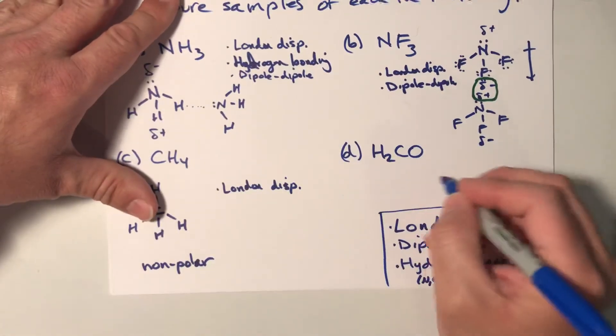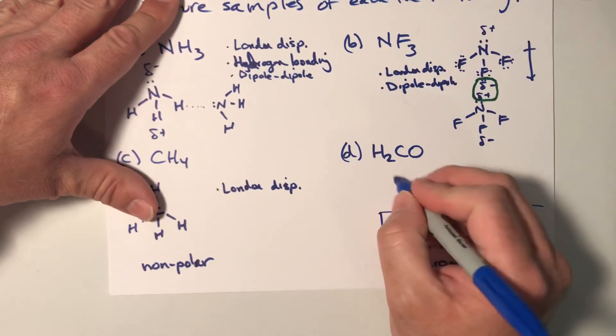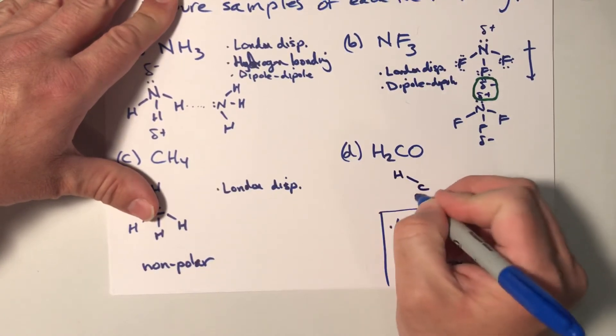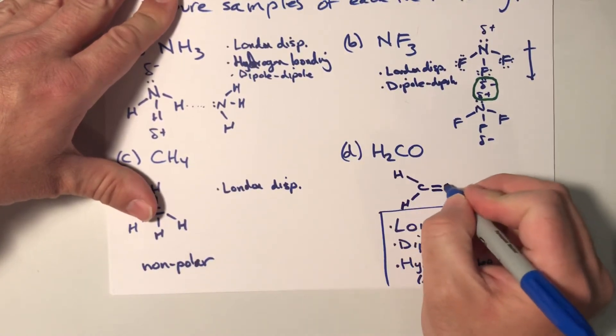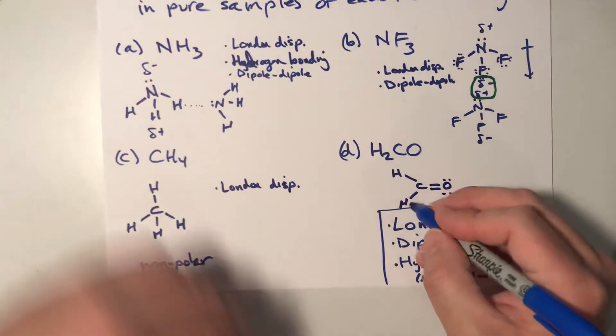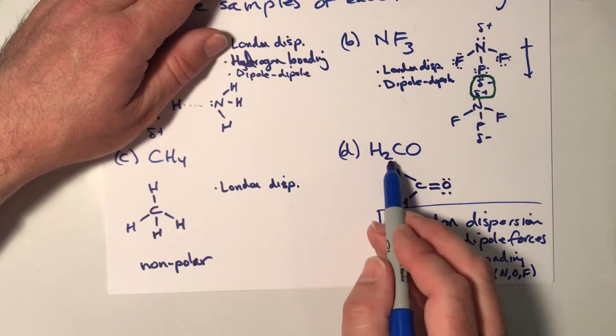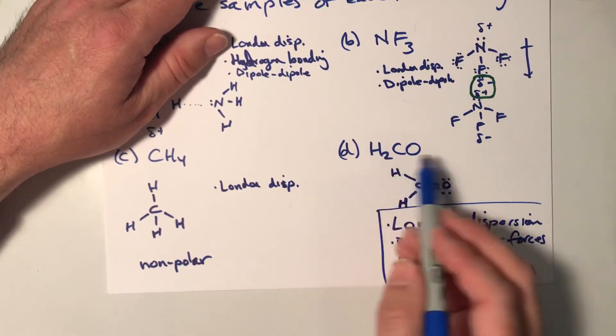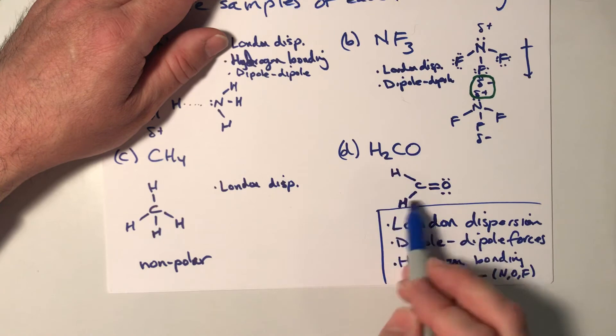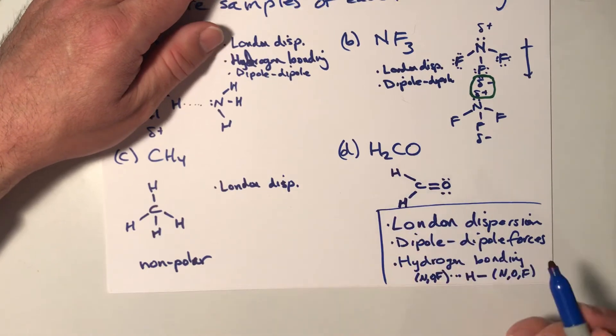Okay. H2CO, when you draw it, it is trigonal planar. You should have gotten this for the Lewis structure. Remember that when we write it like this, we write H2CO, we're trying to hint at the shape, that there's two H's attached to the C and then the O's over here.